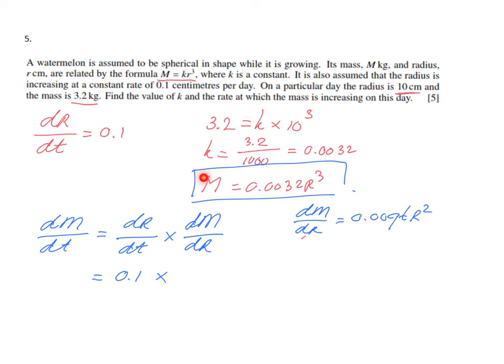They say the radius is 10 centimeters, so I'm going to substitute that. 0.0096 times 100 (10 squared), and that is 0.96.